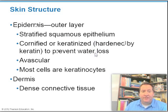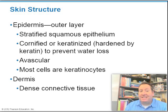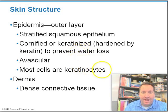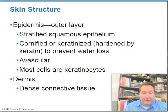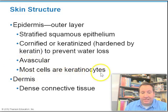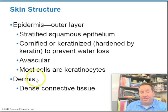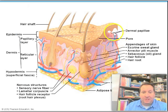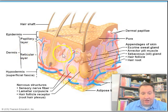Looking at the skin structure itself, the outer layer you can touch is called the epidermis. The epidermis is composed mostly of stratified squamous epithelial cells that are keratinized — hardened by keratin to prevent water loss. It's avascular, and most of the cells are keratinocytes secreting keratin. Underlying the epidermis is the dermis, which is composed of dense connective tissue.